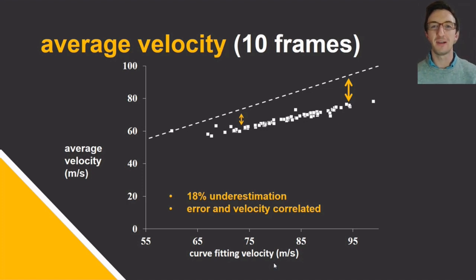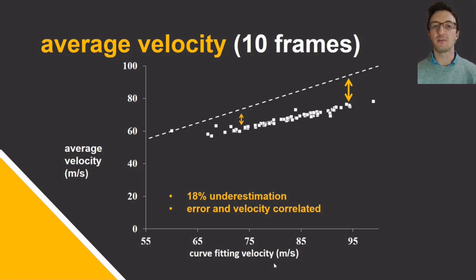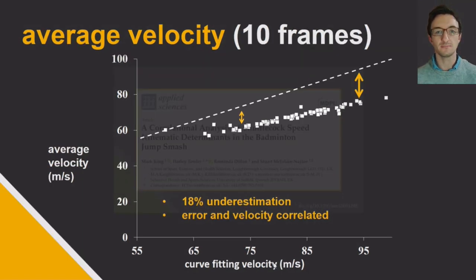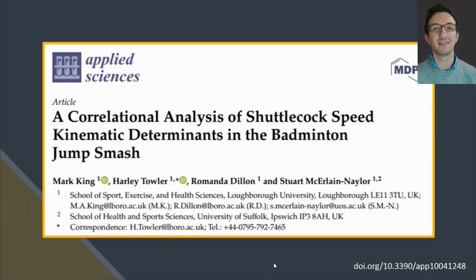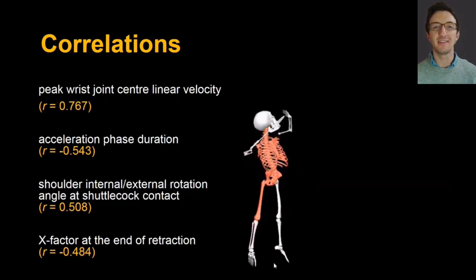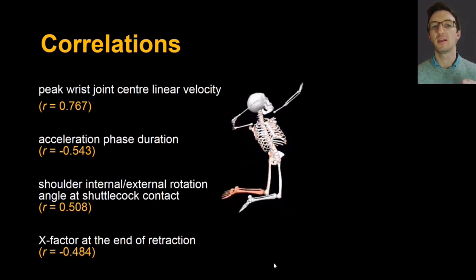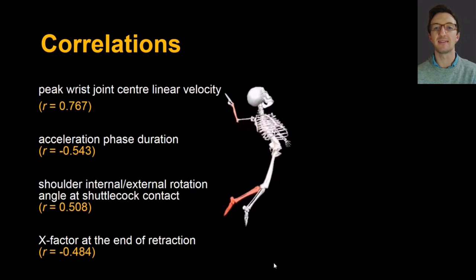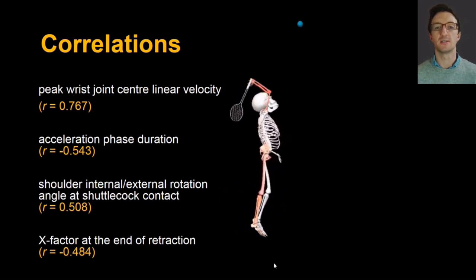There is also a relationship between shuttle speed and the magnitude of the difference between the two methods: the greater the smash speed, the greater the difference, which is not surprising given that drag force is proportional to velocity squared. We were then able to use this method to give more accurate dependent variable measures in investigations of technique factors associated with shuttle speed, reporting the technique aspects with the greatest correlation to shuttle speed in a paper in Applied Sciences.